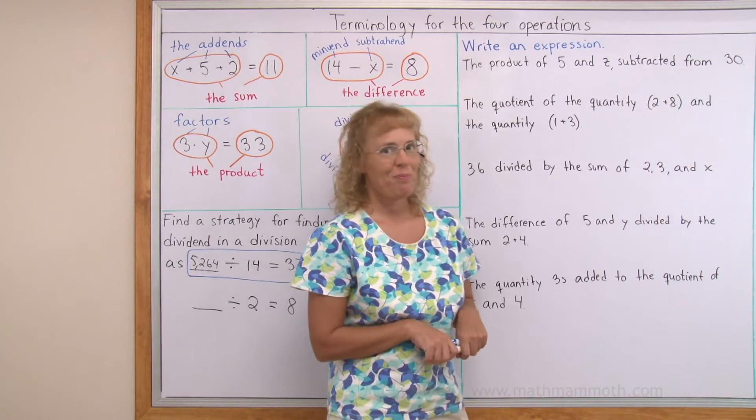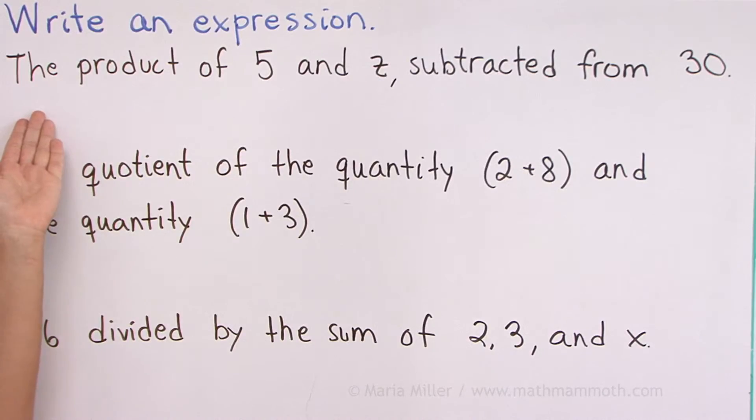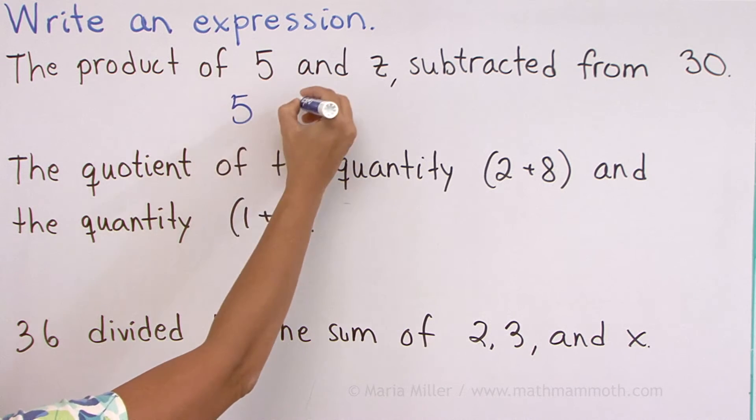Write an expression. The product of 5 and z subtracted from 30. Think about it for a minute. The product of 5 and z subtracted from 30. I'm going to start out with the product of 5 and z. That's the multiplication, right?